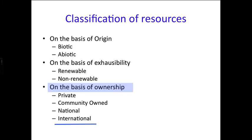The next type is international resources. International institutions regulate some resources — for example, oceanic resources beyond 200 nautical miles of the exclusive economic zone belong to the open ocean, and no country can utilize these without the concurrence of international institutions.